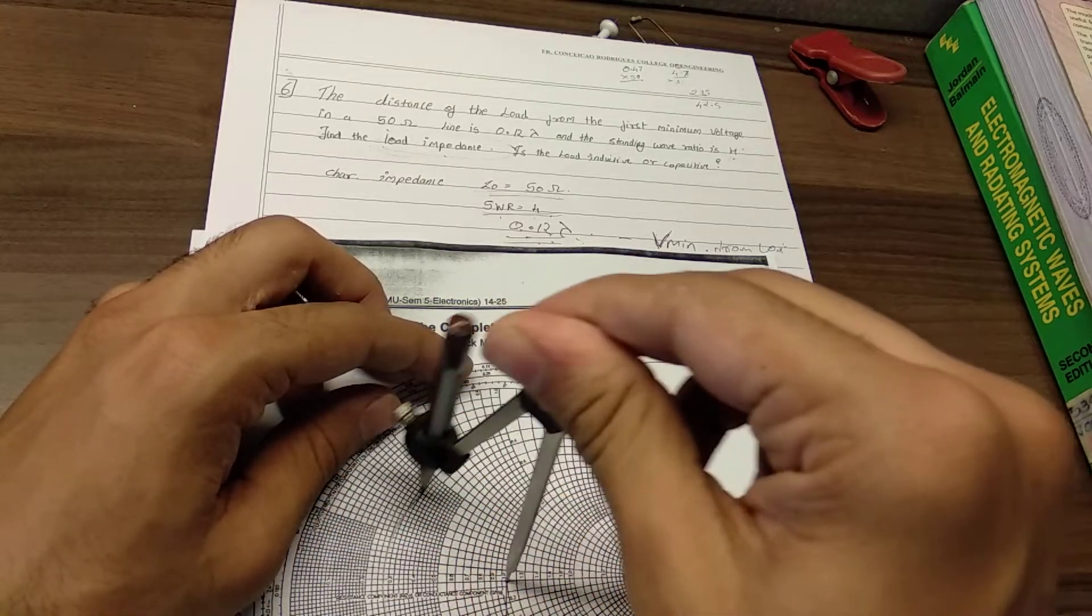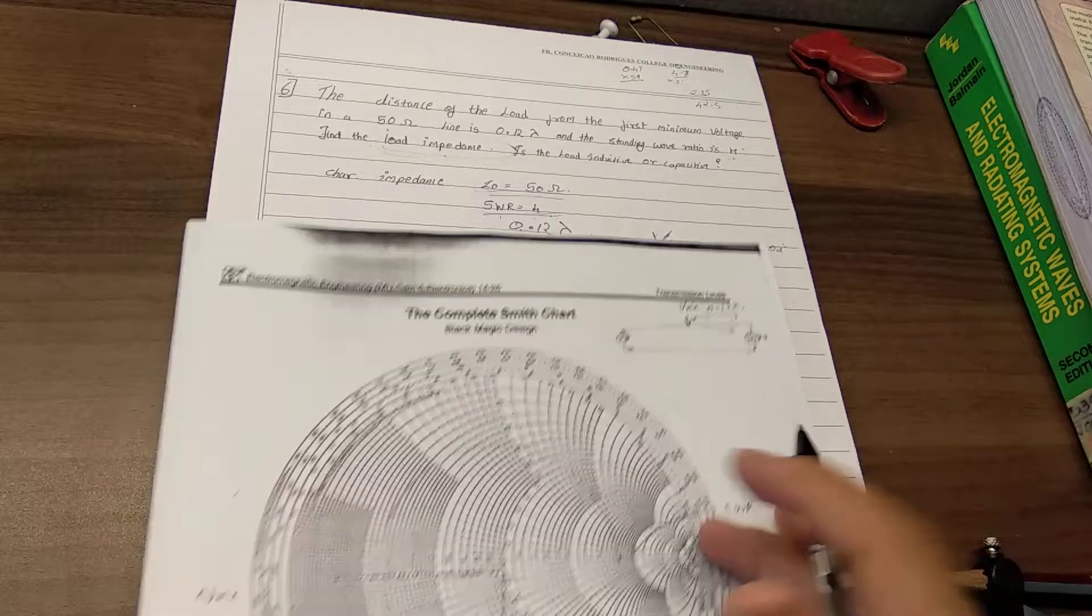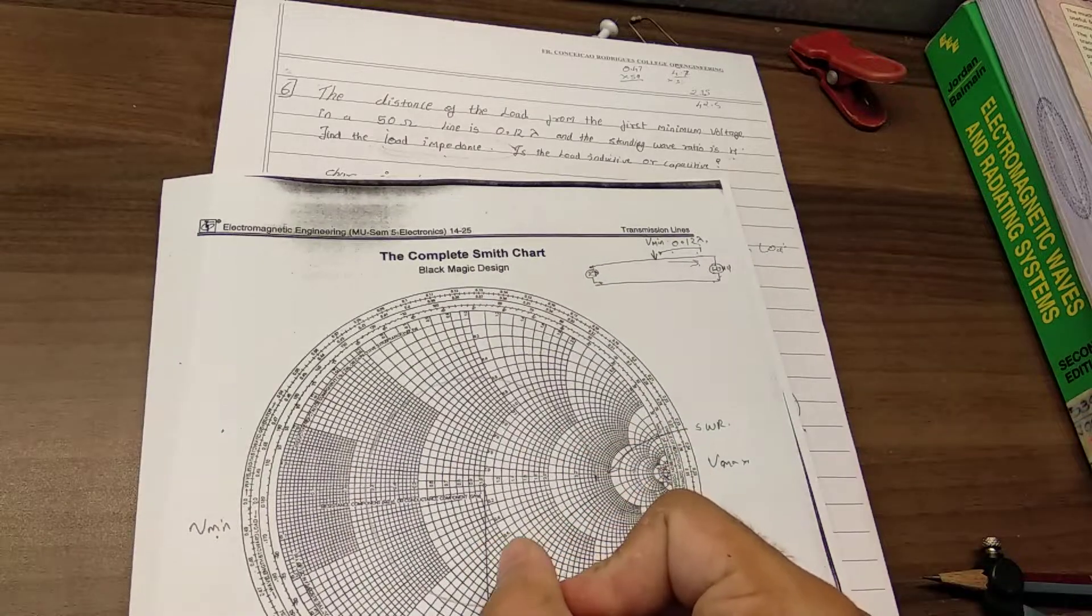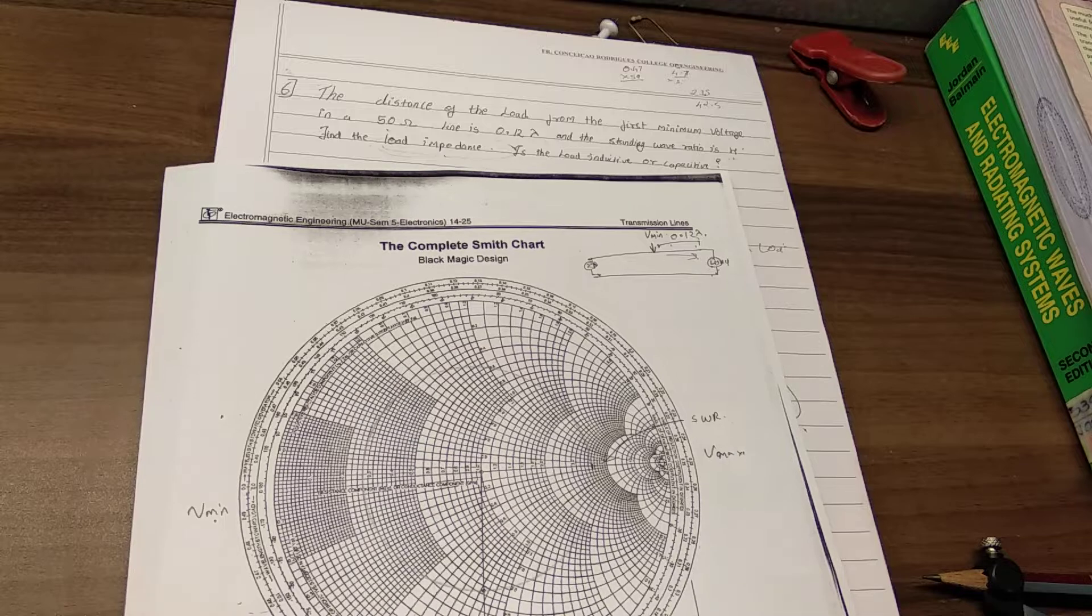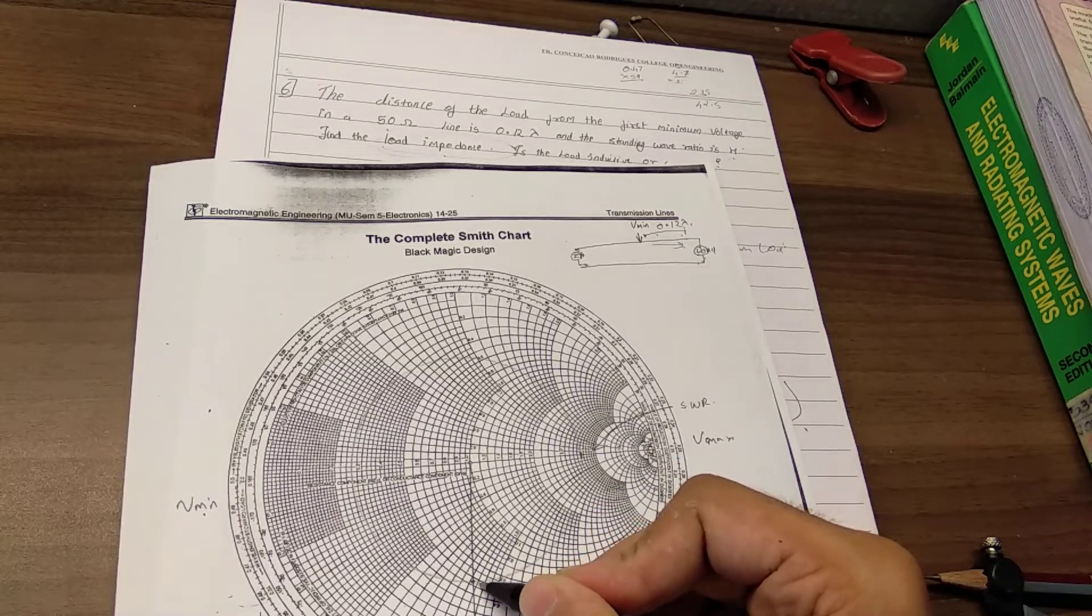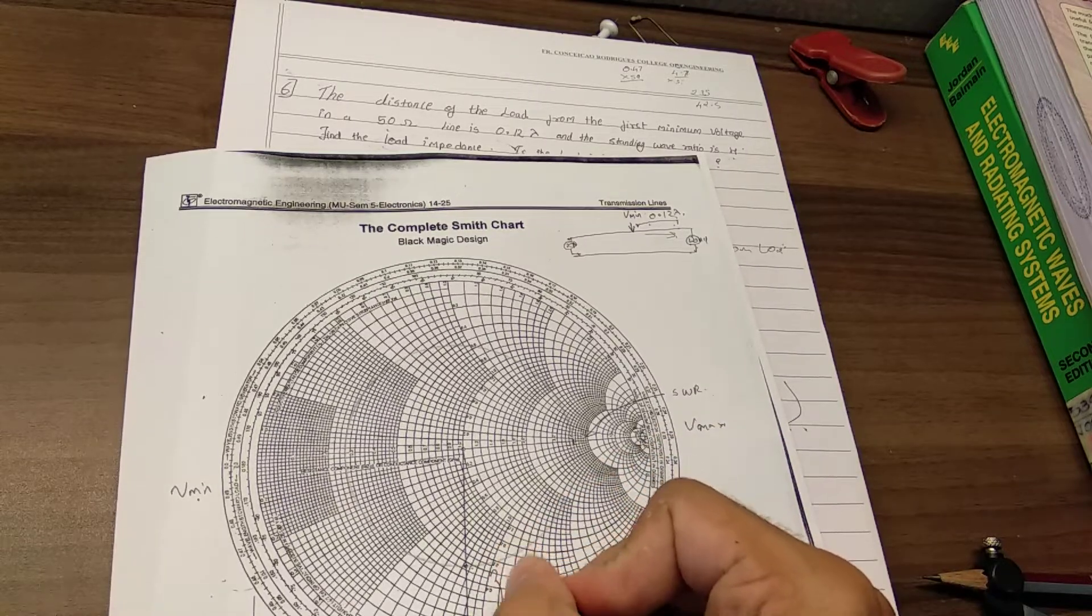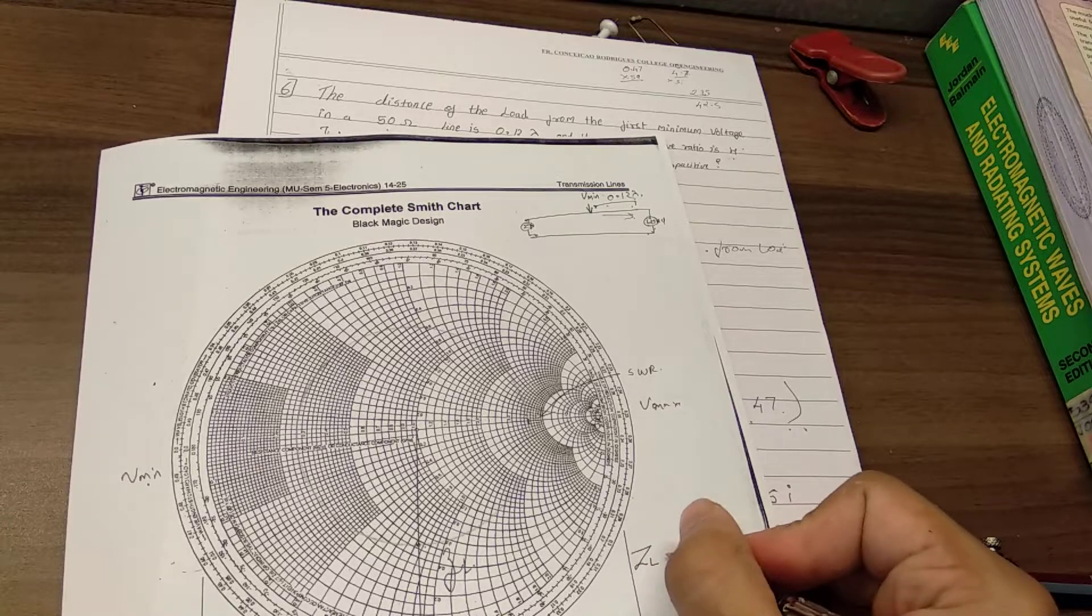And this is my constant VSWR circle. So this is where my point intersects the circle, the line intersects the circle. Now we are going to find out all the points associated. This is where my ZL is, small zl, where ZL, that is our actual load impedance, would be Z0 times zl.